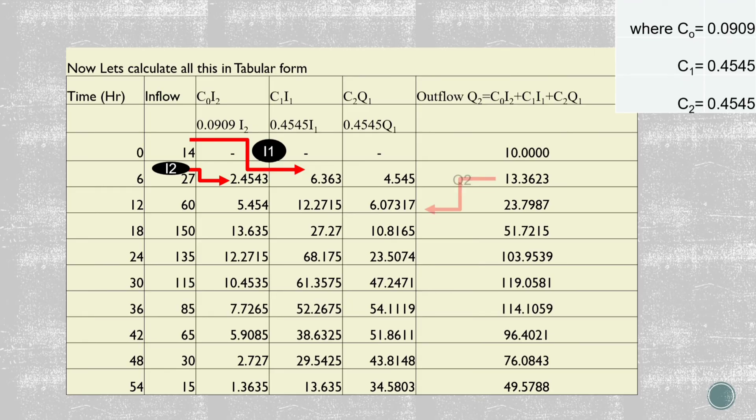For the calculation of C2*Q1, we have to know the value of Q1. As already given in the question, the outflow is 10, and this will be considered as Q1. The value of C2 is already calculated as 0.4545. On multiplying C2 and Q1, we will get the new value.